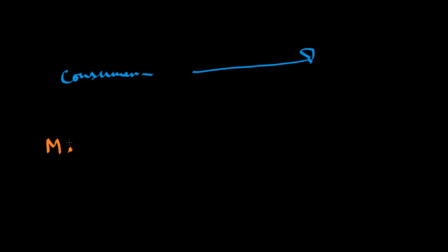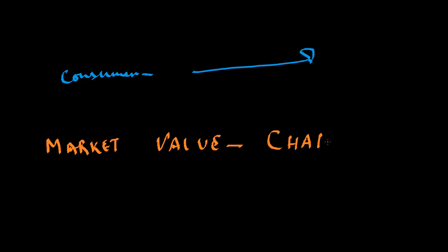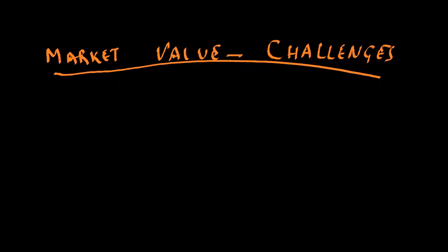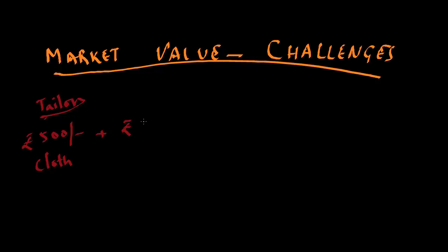While assigning the market value, there are certain challenges that economists have to overcome. Let's see what these challenges are. Let us say we have a tailor or a dressmaker. He or she purchases a cloth worth 500 rupees. Out of this 500, they make something like 100 rupees for stitching — these are the stitching charges.